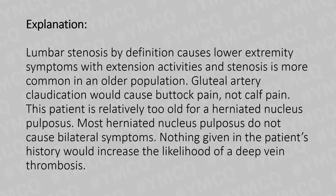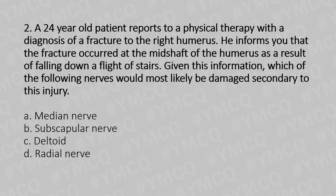Now let's move to our second question. A 24-year-old patient reports to physical therapy with a diagnosis of fracture to the right humerus. He informs you that the fracture occurred at the mid-shaft of the humerus as a result of falling down a flight of stairs. Given this information, which of the following nerves would likely be damaged secondary to this injury? Option A: Median nerve. Option B: Subscapular nerve. Option C: Deltoid nerve. Option D: Radial nerve.